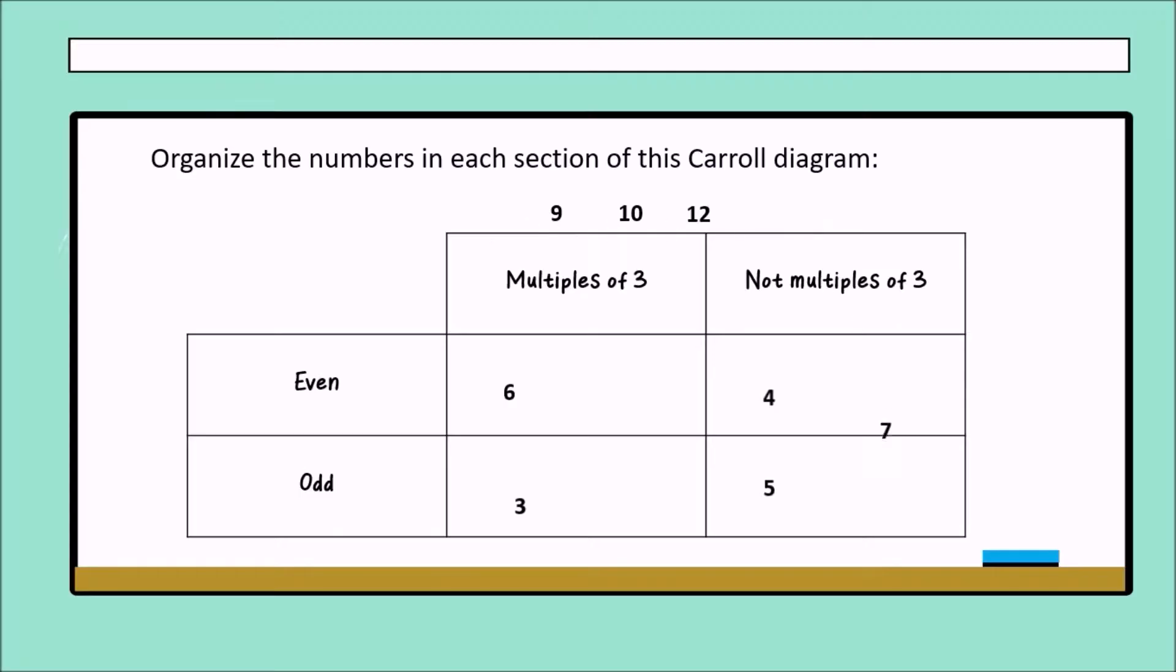Now, seven. Seven is an odd number and not a multiple of three. Now, nine. Perfect. Because nine is a multiple of three. Three times three equals nine and is an odd number.